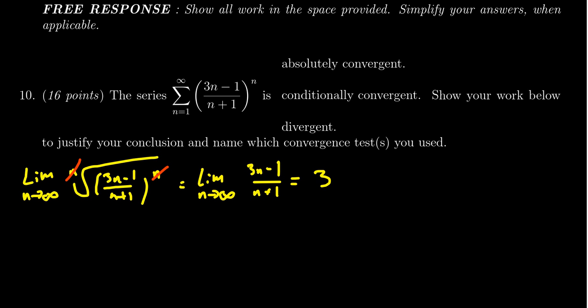We get that the limit of this thing is 3. Notice that 3 is greater than 1, and so this tells us that the series is divergent by the root test. Make sure you circle the divergent above here. It's divergent by the root test.